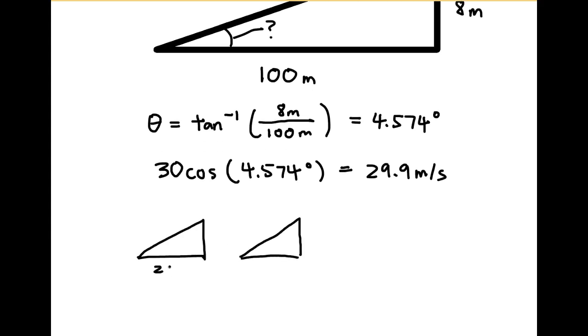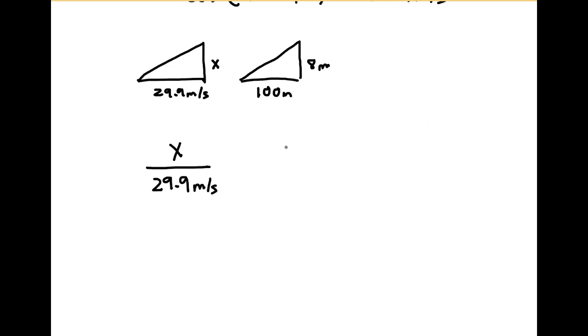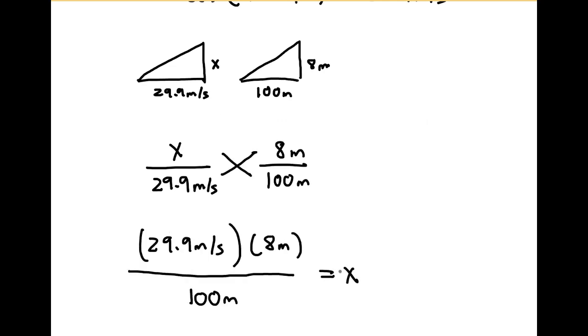Then, by using ratios, 29.9 meters per second divided by 100 meters, then multiplied by the 8 meter elevation will give us the elevation per second.